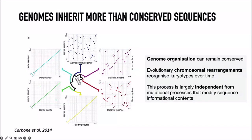This organization is reorganized by what we call chromosomal rearrangements — large-scale mutational events that reorganize not necessarily the content of DNA but the order and how it is organized in the genome. This is an under-investigated type of mutational process, and it's particularly interesting because it's largely independent from the mutational processes that modify sequence content, such as base mutations or small indels. It's complementary to sequence alignments for understanding genome evolution.